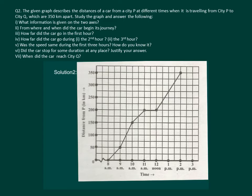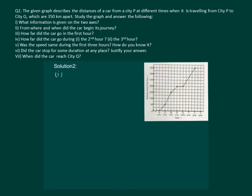Let us first try to understand our graph. We are given time on the x-axis, and we are given distance traveled from P in kilometers on the y-axis. That means the graph is showing the distance traveled by the person at different time intervals. The first part of our question asks: what information is given on the two axes? Clearly, the x-axis gives the time, while the y-axis gives the distance from P.